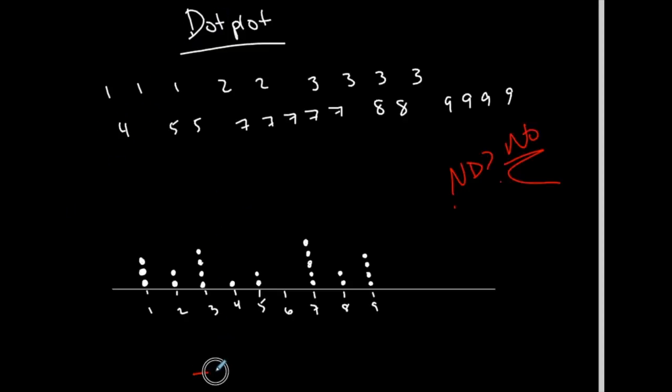Student asks: Why is it not normally distributed for this one? Instructor responds: You want it to look symmetric and bell shaped to be normally distributed. That does not look like that. If I had these values here and it increased, and I had the most in the middle, and then it decreased similarly as it increased, then that would be like a symmetric bell shaped kind of curve, but it doesn't.